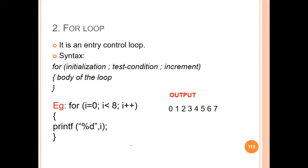Now we are going to cover the for loop. The for loop is also an entry control loop — if the condition is true, we execute the for loop body.